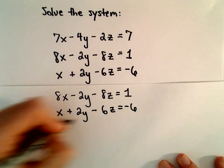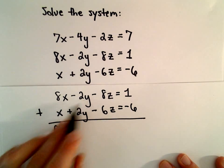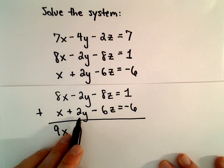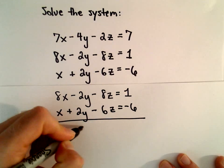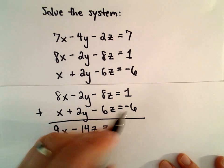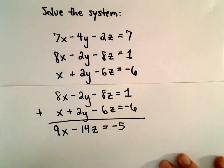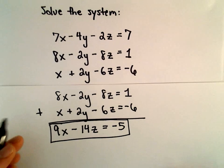So if I add those two equations, 8x plus 1x is 9x, negative 2y plus 2y is 0y, negative 8z plus negative 6z will be negative 14z, and 1 plus negative 6 will be negative 5. Okay, so now we've got an equation involving only x and z.